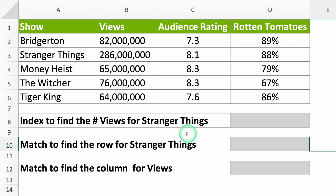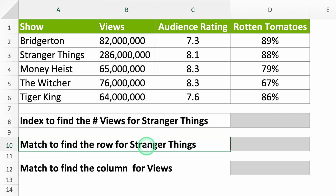First, I'll explain INDEX, then MATCH, and finally I'll show you how to use them together. Let's start with the INDEX function. It tells you what's in a cell where a row and column meet, if you tell it where to look.